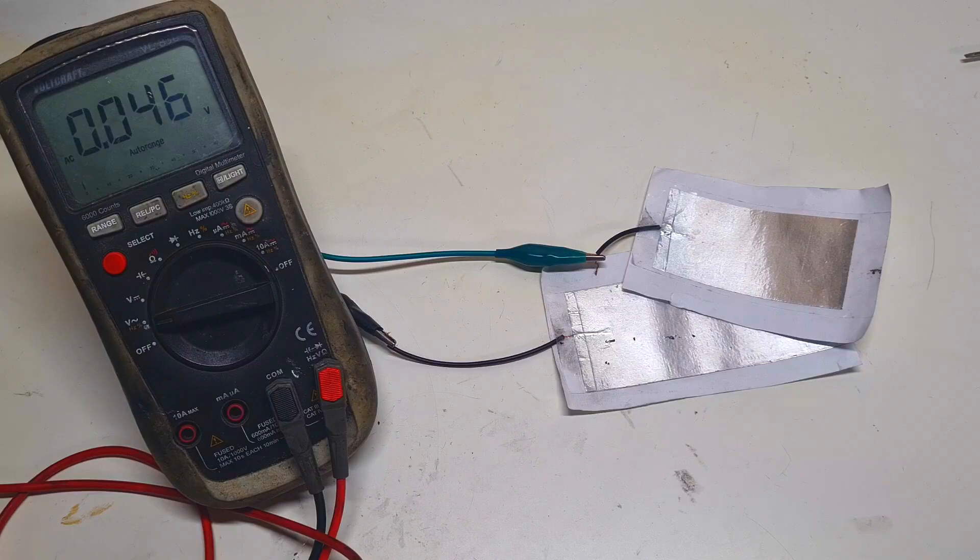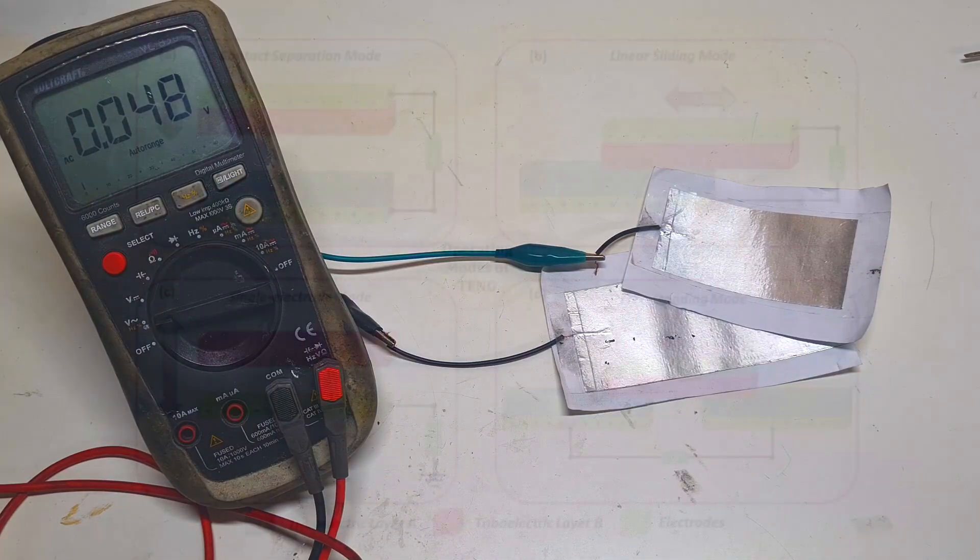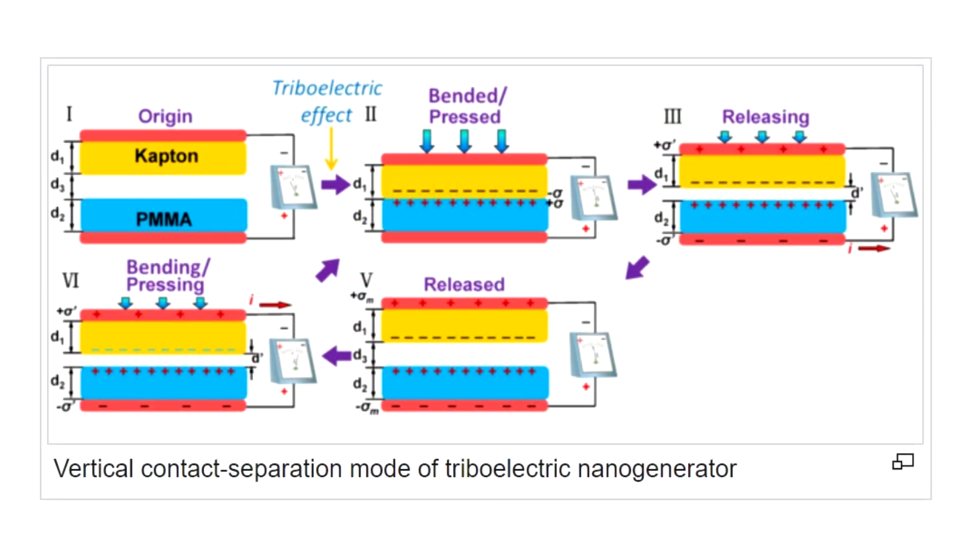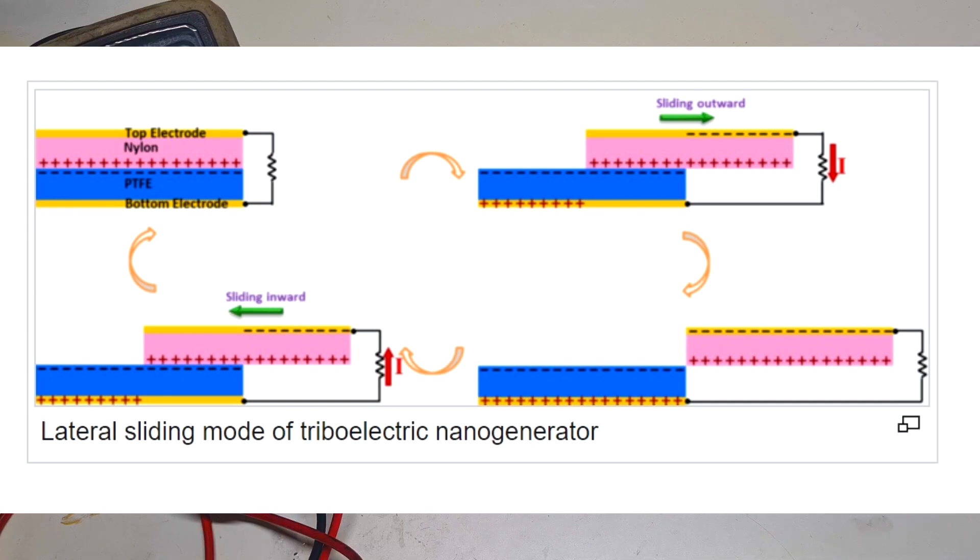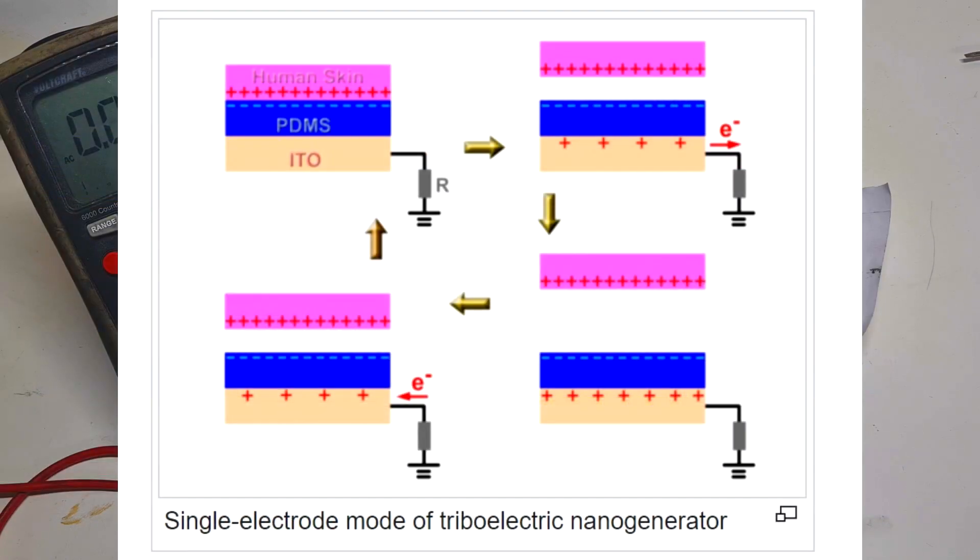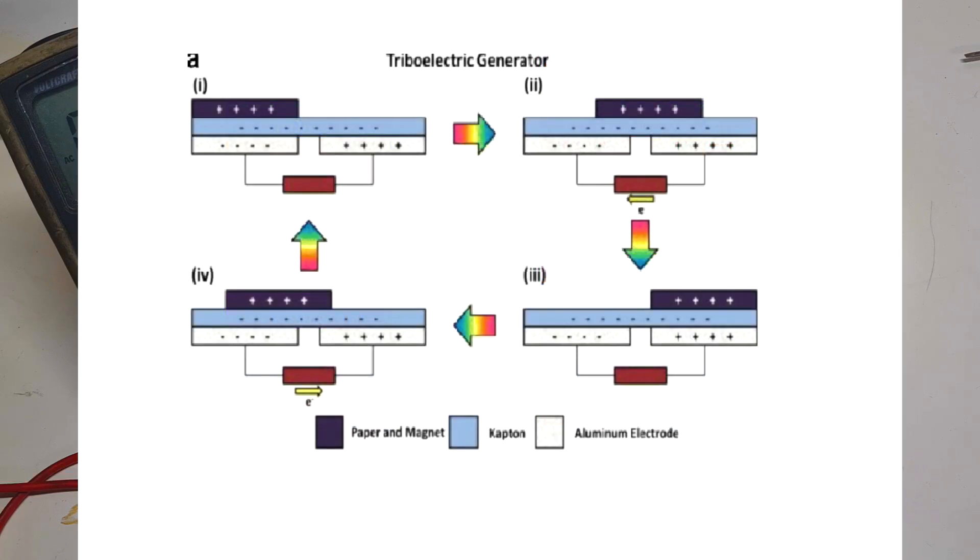We also have four fundamental modes in which the triboelectric generator will operate. The first fundamental mode is the vertical contact separation mode. The second is the contact sliding mode. The third one is the single electrode mode. And the last one is the freestanding triboelectric layer mode.